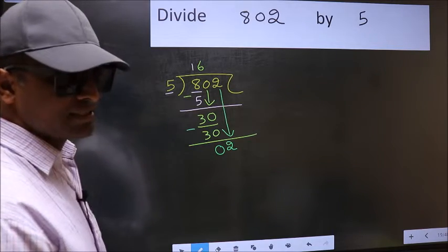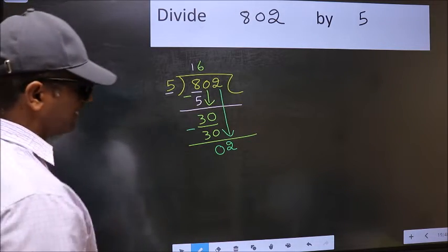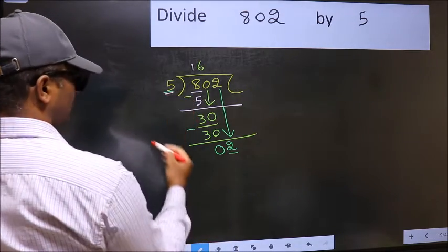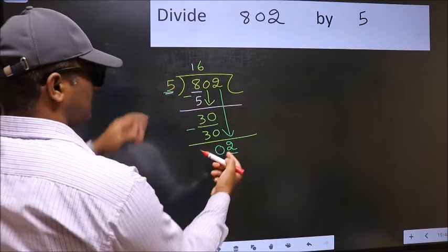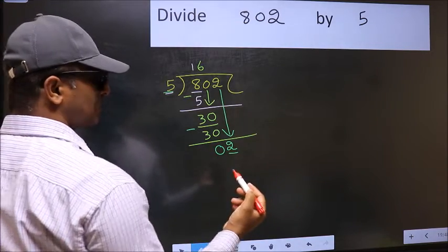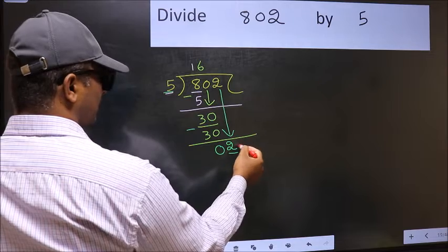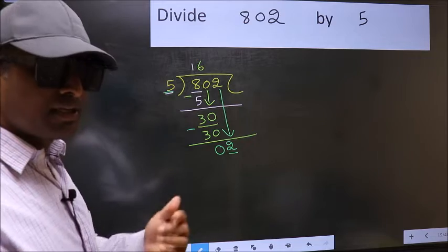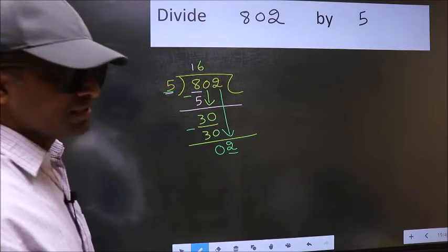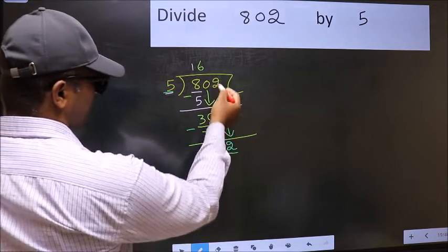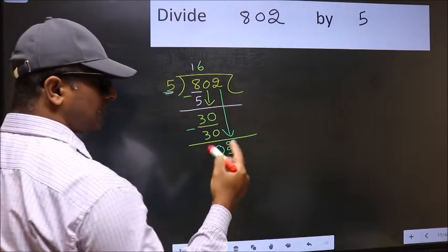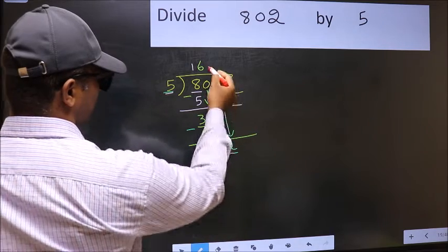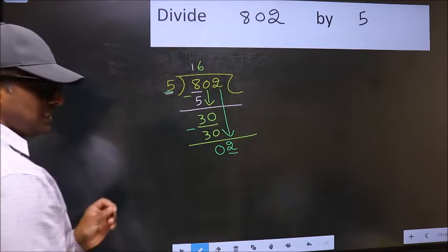After this step, the mistake happens. And the mistake is this: here we have 2 and here 5. 2 is smaller than 5. So what many do is they directly put dot and take 0, which is wrong. Why is it wrong? Because just now you brought this number down, and in the same step you want to put dot and take 0, which is wrong.